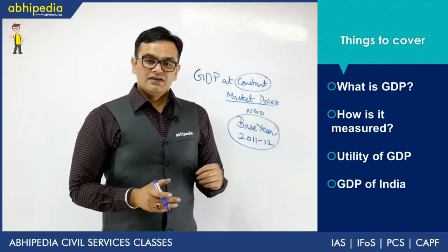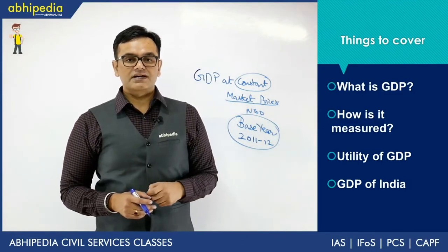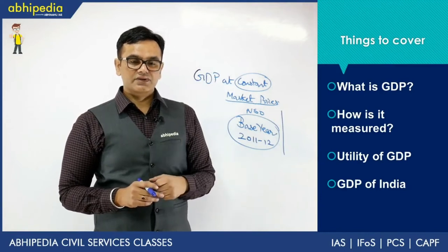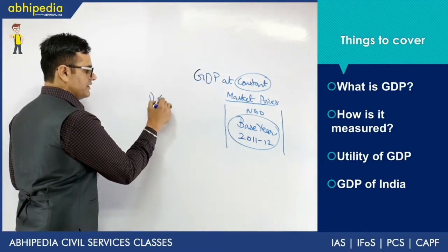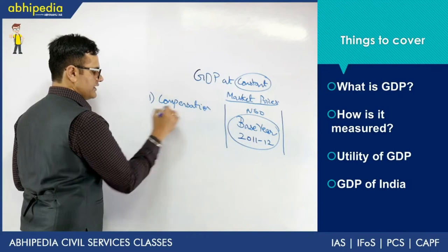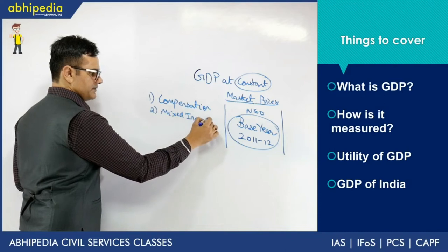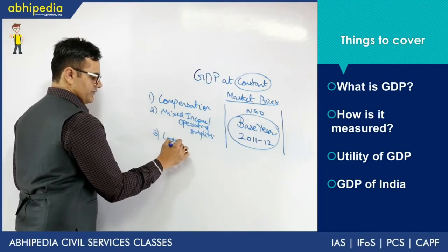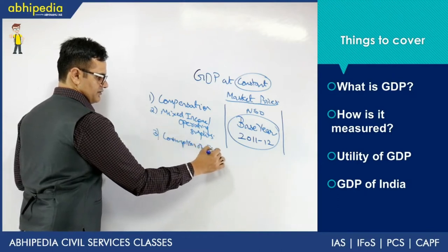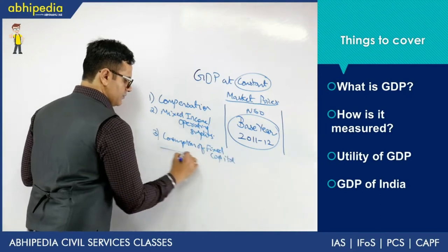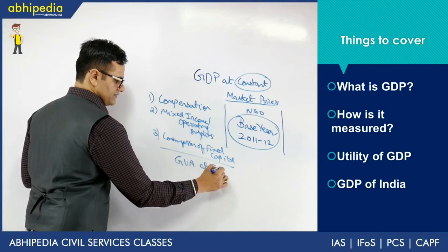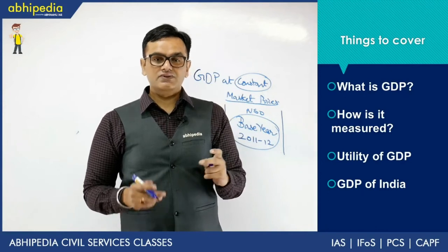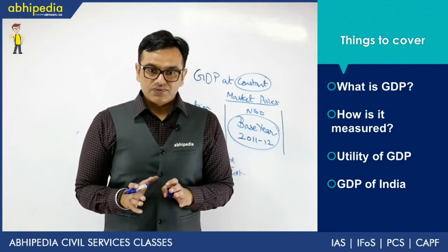Back in the day it was CSO. This base year was selected in 2015, and at that time methodological changes were also made. The methodology for GDP calculation was revamped to now include three things: compensation, mixed income and operating surplus, and consumption of fixed capital. From these three considerations we arrive at GVA — gross value added at factor cost. GVA is basically total output minus intermediate cost. For example, if something worth 100 rupees is made with 80 rupees of input, the gross value addition is 20 rupees.